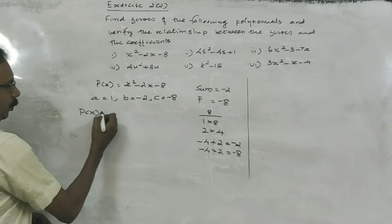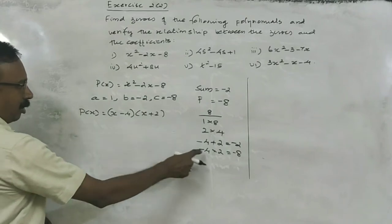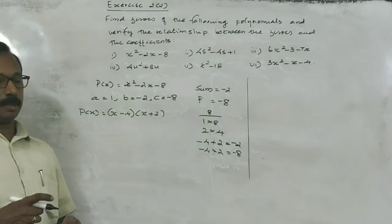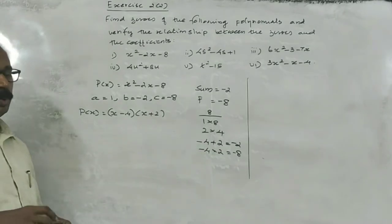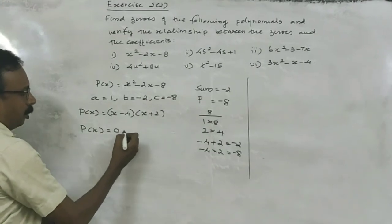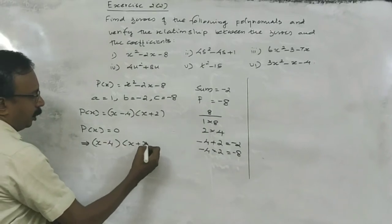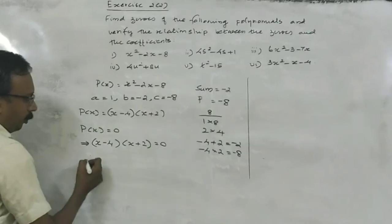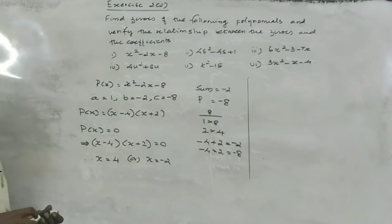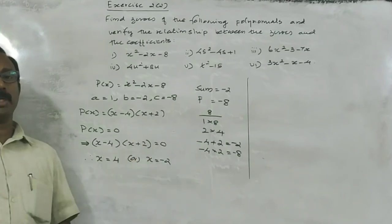Therefore, p of x is equal to x minus 4 into x plus 2. Write x by the first factor, write again x by the second factor — the second factor is positive here. To find zeros of this polynomial, put p of x equal to 0, which implies that x minus 4 into x plus 2 is equal to 0. Therefore, x is equal to 4 or x is equal to minus 2. x minus 4 equals 0 means x equals plus 4.